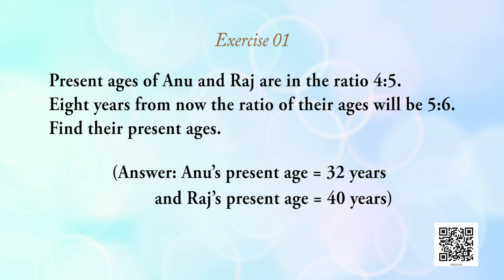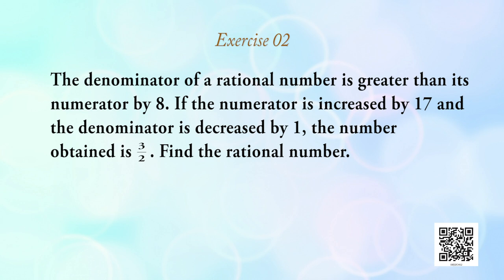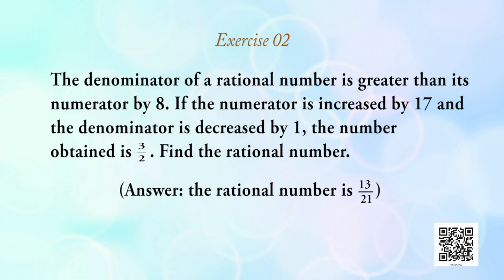Problem 2: the denominator of a rational number is greater than its numerator by 8. If the numerator is increased by 17 and the denominator is decreased by 1, the number obtained is 3/2. Find the rational number. It looks difficult but you can do it by applying the above method. For your reference, the required rational number is 13/21.